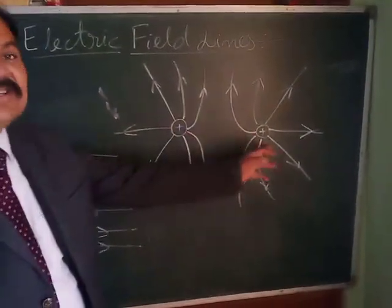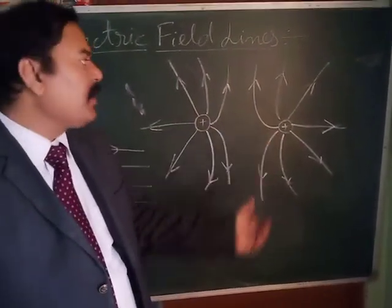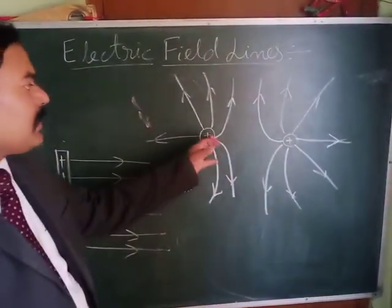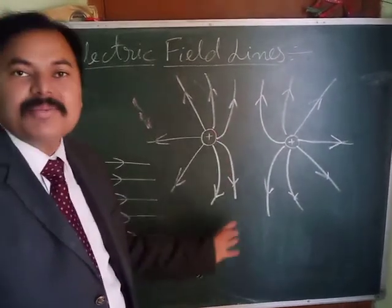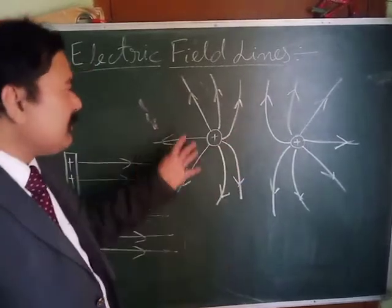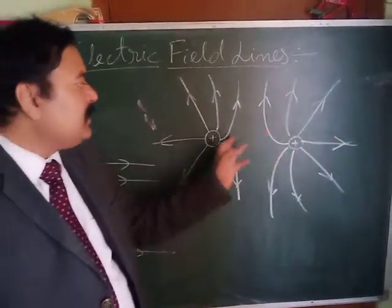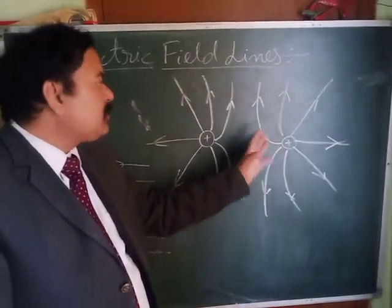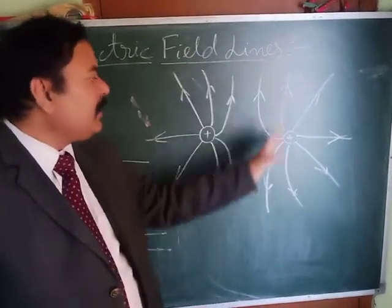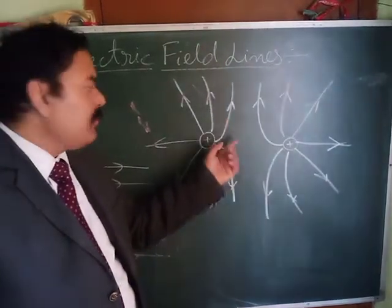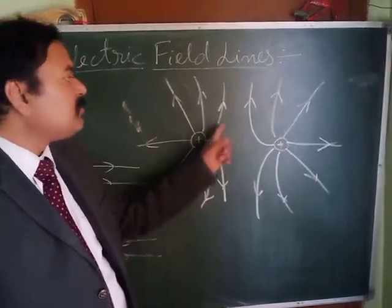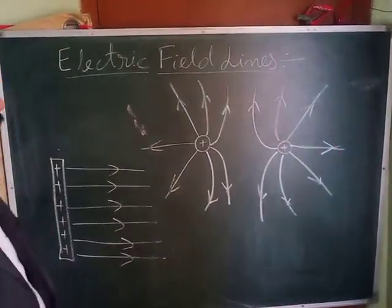Now if there are similar charges — suppose both are positive — we know that electric field lines come out of positive charges and move away. But here there will be repulsion from both charges, so the lines will bend like this. When you place a unit positive charge, both charges repel it, so it moves like this. This is the pattern of electric field lines due to a pair of positive charges.